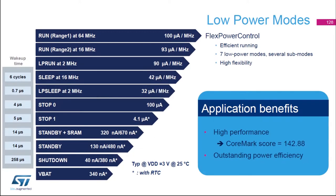The STM32G0 devices feature flex power control, which increases flexibility in power mode management and further reduces the overall application consumption. Run mode can support a system clock running up to 64 MHz with only 100 µA/MHz. At 16 MHz, the consumption is even lower at 93 µA/MHz. The STM32G0 devices support seven main low power modes.